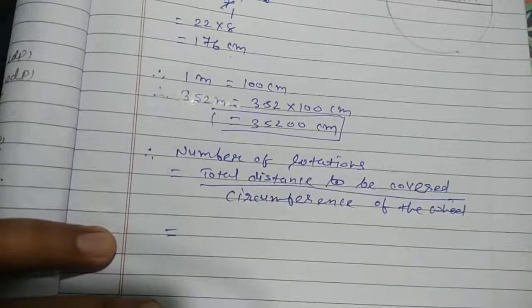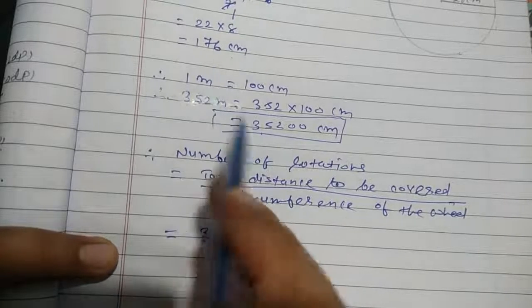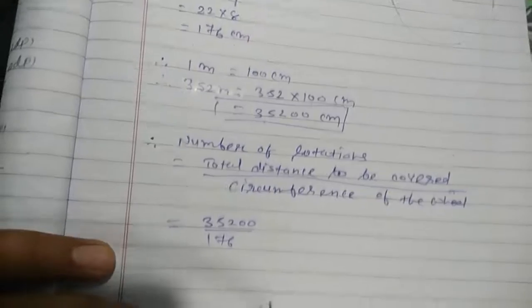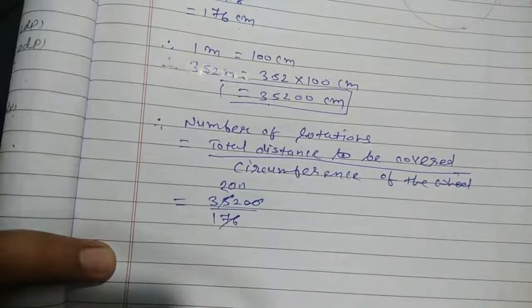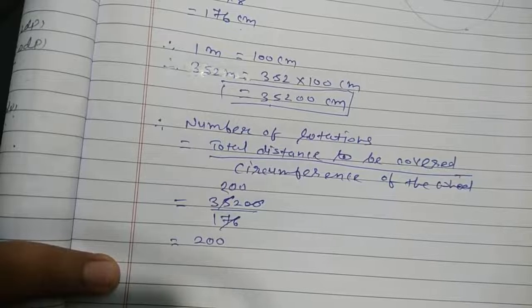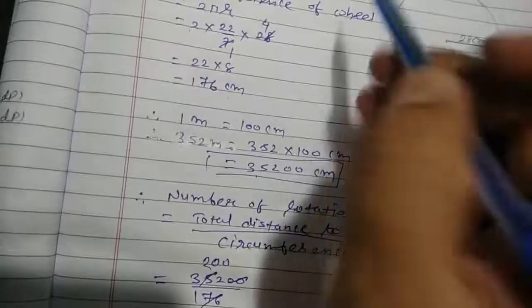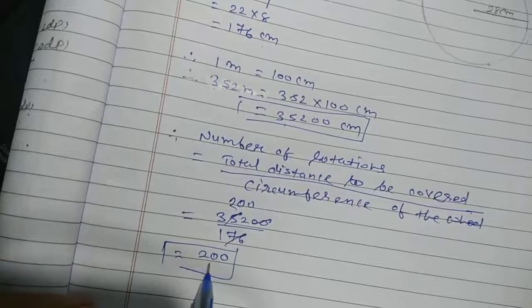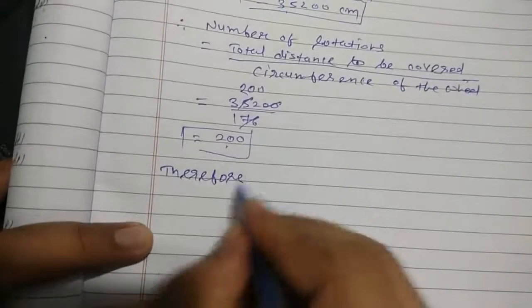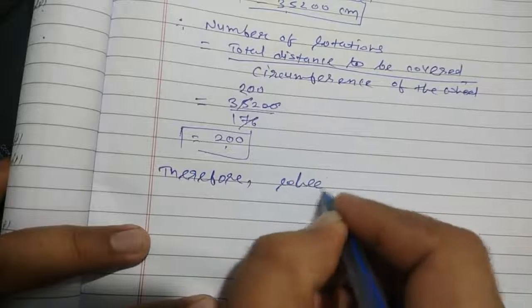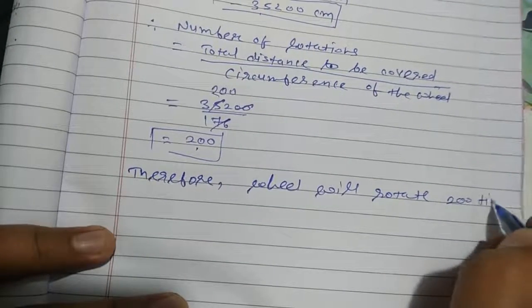Number of rotations = total distance ÷ circumference of wheel = 35200 ÷ 176 = 200. Therefore, the wheel will rotate 200 times to cover 352 meters.